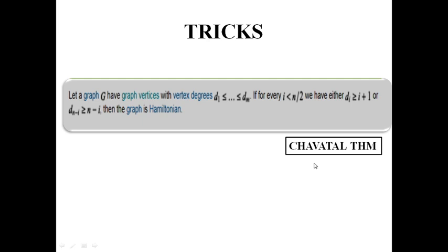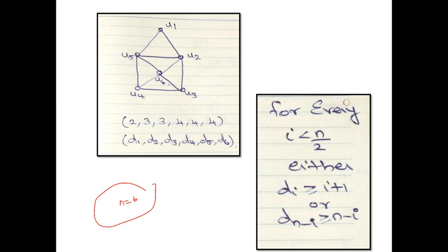That is nothing but Chvátal's theorem. Let's see this theorem using an example. I took this example which consists of 6 vertices. You can write the degree sequence: the degrees are 2, 4, 4, 4, 3, 3. Written in ascending order: 2, 3, 3, 4, 4, 4.